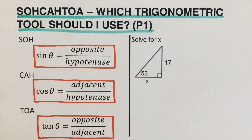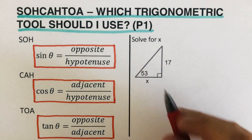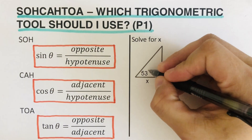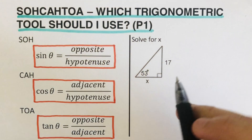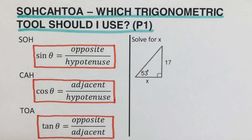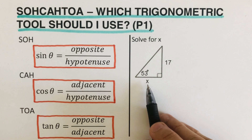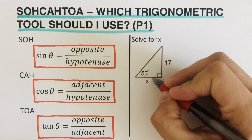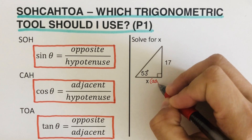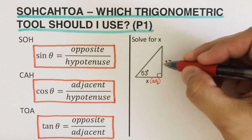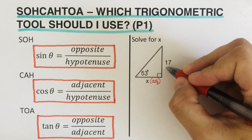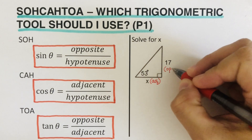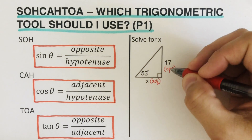Now let's take this first example. The angle is 53 degrees and we are supposed to determine the X value. The first step is to label the sides of the triangle. This side next to 53 degrees is adjacent, so I'm going to label it as adjacent. And this side across from the 53 degrees is the opposite. So I've labeled it adjacent and opposite.